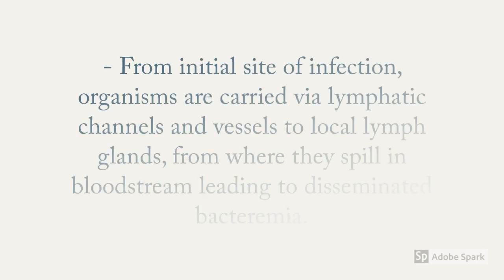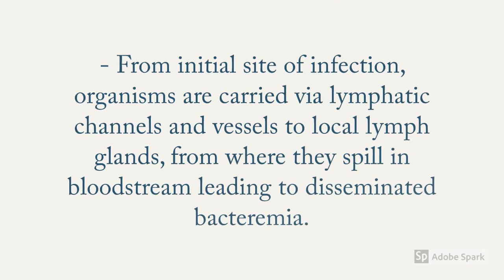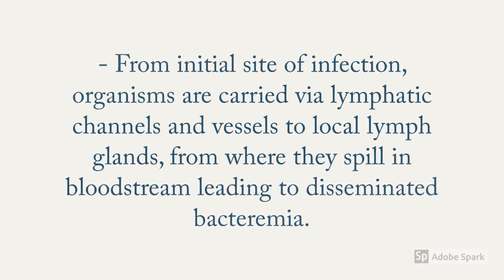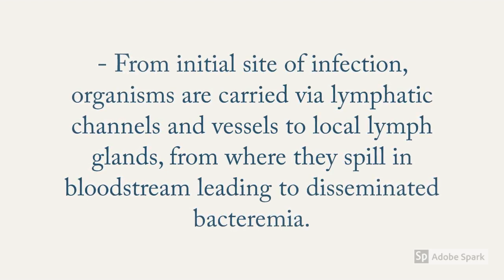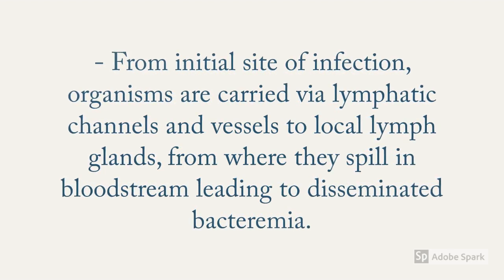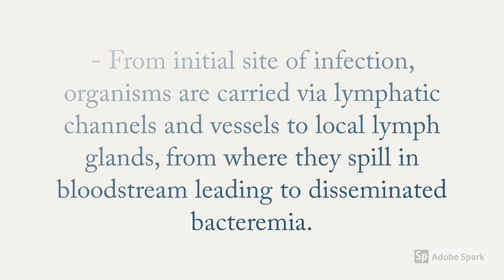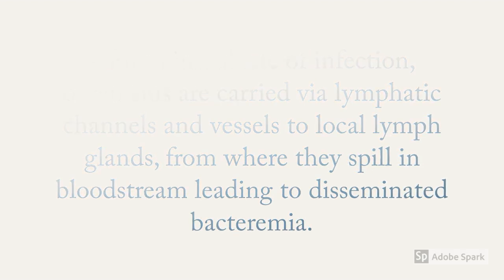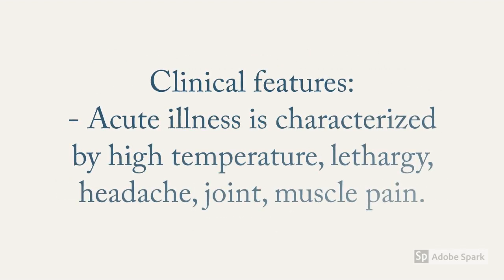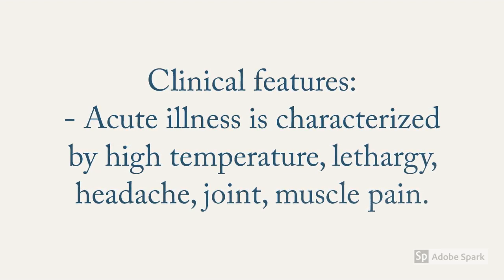From the initial site of infection, organisms are carried via lymphatic channels and vessels to local lymph glands, from where they spill into the bloodstream, leading to disseminated bacteremia. This provides the organism access to manifest infection in any system. Acute illness is characterized by high temperature, lethargy, headache, and joint and muscle pain.